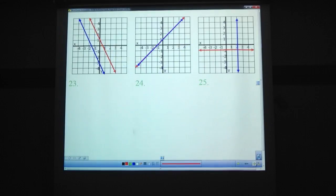Try out these four here. Pause. And we're back. 23, no solution. They don't cross anywhere. 24, they're crossing every point. Every point is in common there. Infinitely many solutions. 25, they cross at exactly one point, so one solution.